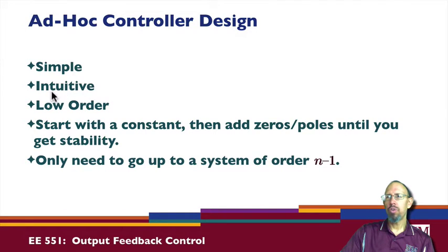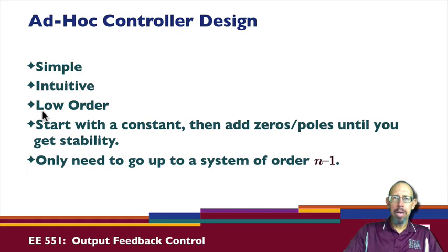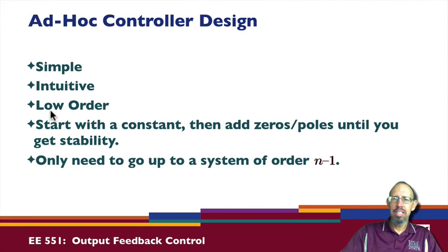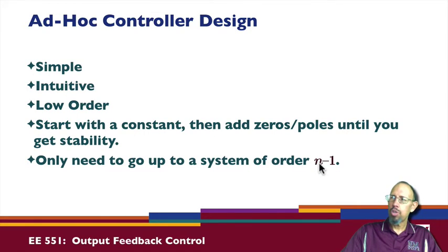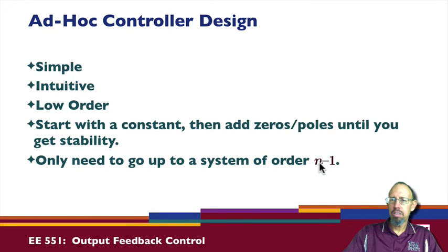It's very straightforward and low order in general. You can start with a static output feedback problem and see how far you can get. If you can't control it, you move on and add one pole at a time to try to stabilize the system. In general you may be able to get a low order controller — start with a constant, add poles and zeros until you get stability. We know we only need to add at most n minus one poles. Notice that when you add a pole you can also add a zero, and those zeros again attract poles.